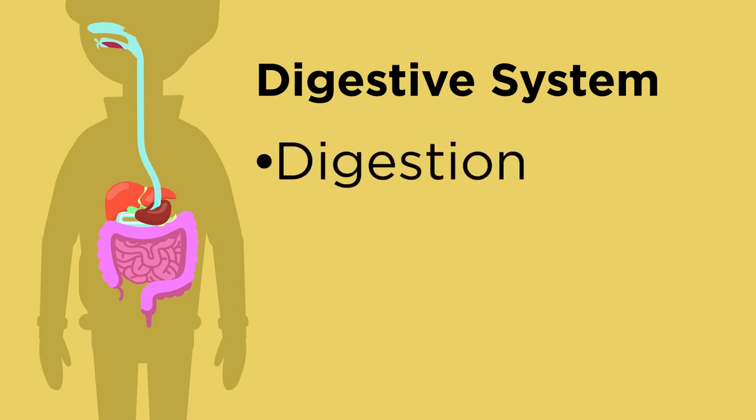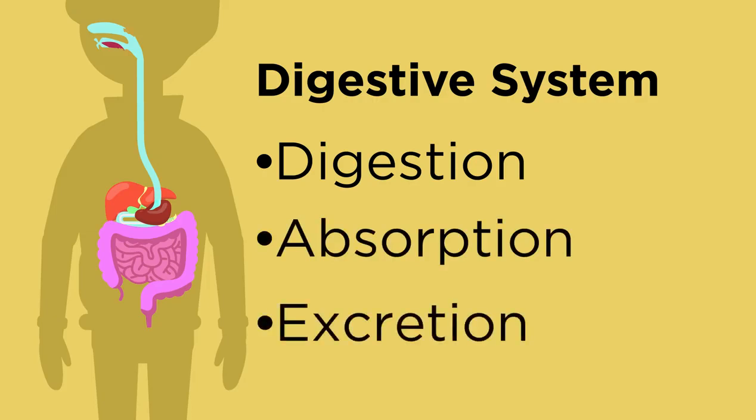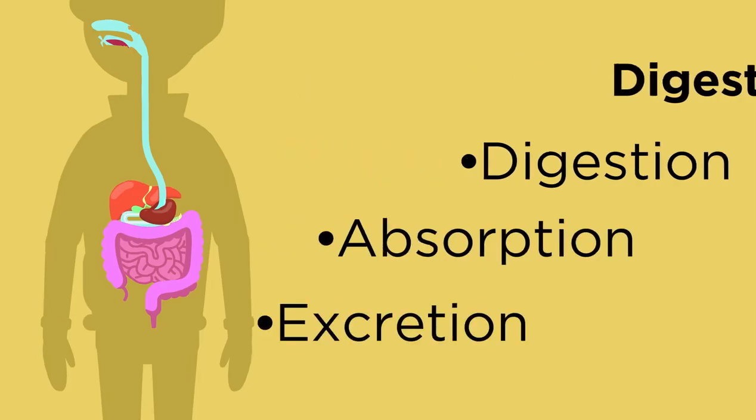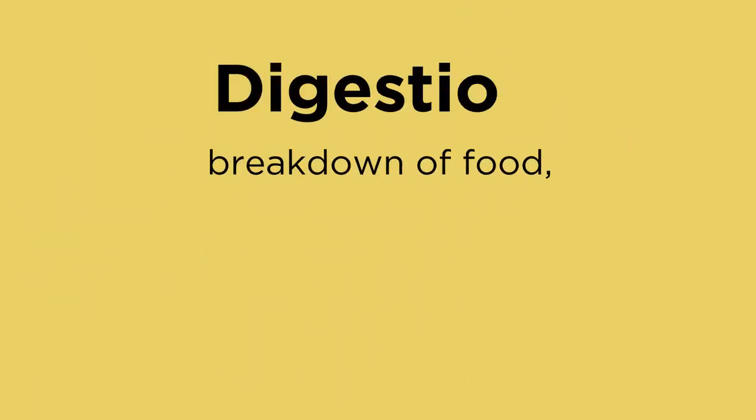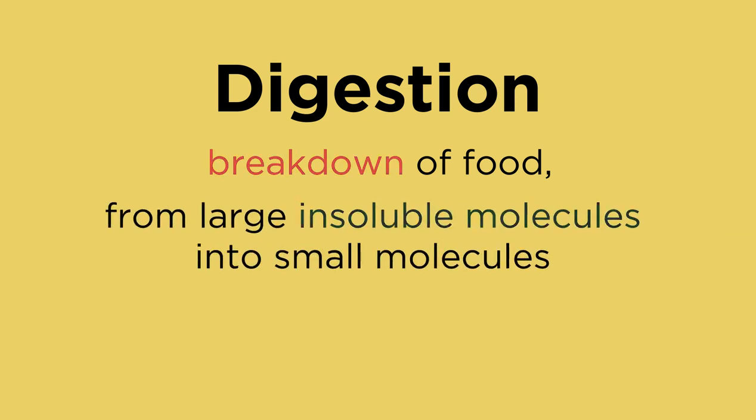Digestion goes hand-in-hand with absorption, which happens in your small intestine, which is what we're going to look at in this video. Digestion is the breakdown of food from large insoluble molecules into small molecules which can be used by your body.